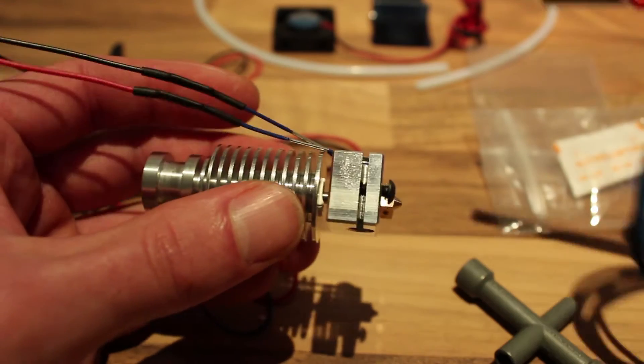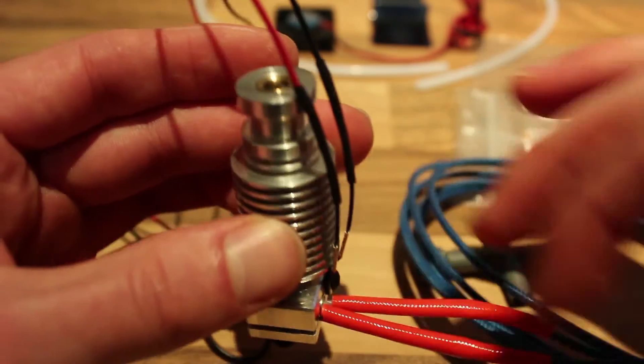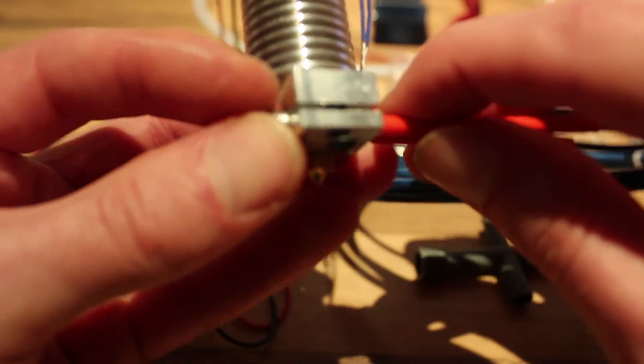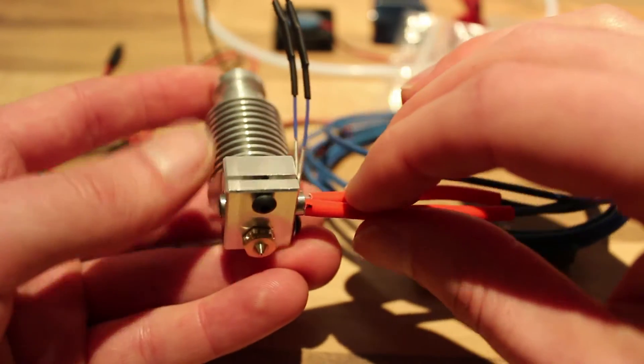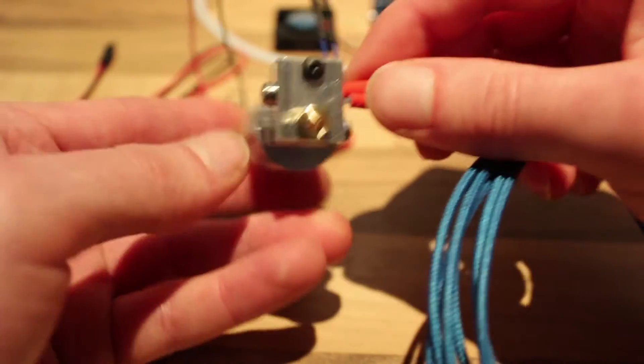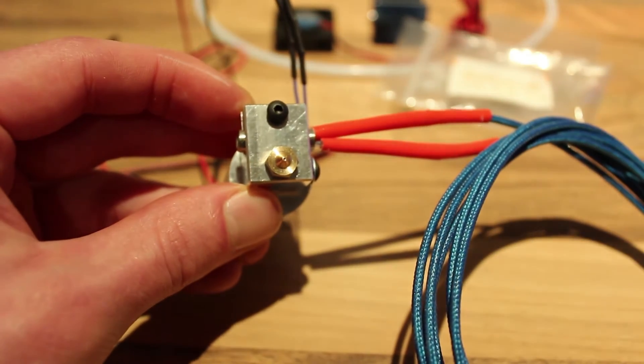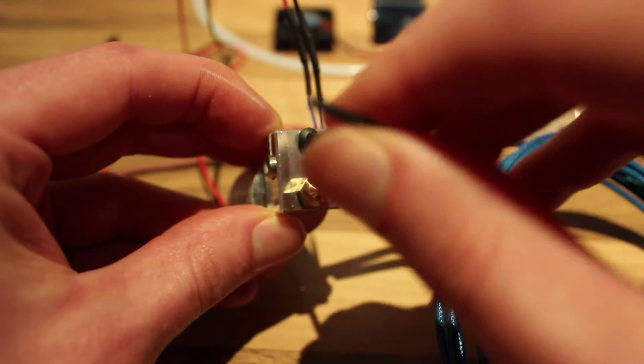Next on the list we can insert our heat block. Make sure it's a little bit equally spread. Yeah, this should be good. And then just tighten it down.